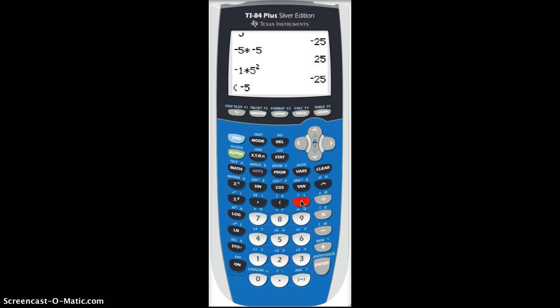If we type negative 5 in parentheses squared, now the calculator is going to interpret this correctly as taking negative 5 times negative 5, the product of two negative numbers, which will become positive.